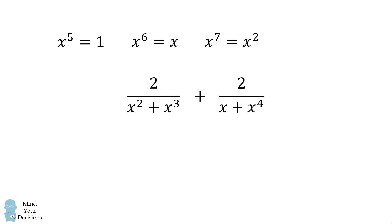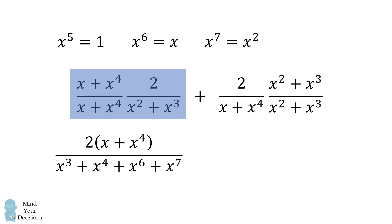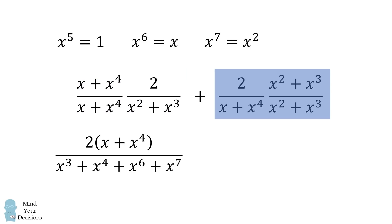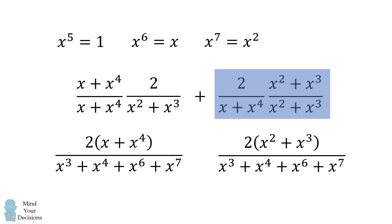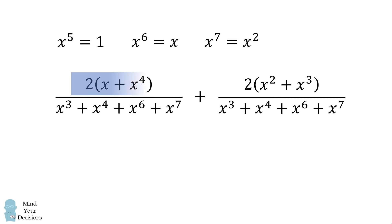We now want to add these two fractions by finding a common denominator. From the first fraction, we multiply by x plus x to the power of 4 divided by x plus x to the power of 4. In the second fraction, we multiply by x squared plus x cubed divided by x squared plus x cubed. Since they then have the same denominator, we can simply sum their numerators.